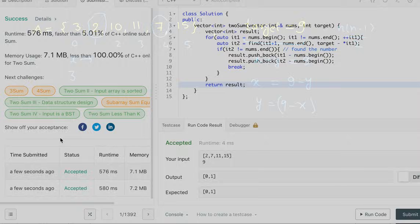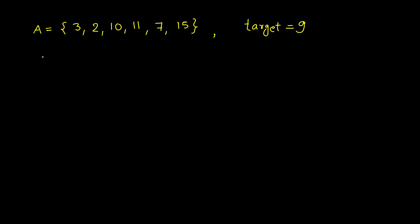So let's look at the second approach using a hash map. Here we will be using the array elements as keys and their positions as values. We can insert all of these elements into the map and then start traversing the array just like our first method. When we are looking at 3, we try to find 6 in the map — if we found 6 we get its position, return the current index and the index from the map. If not, we move forward.